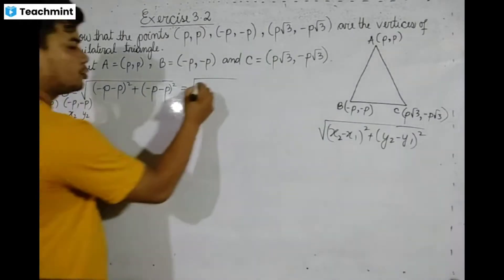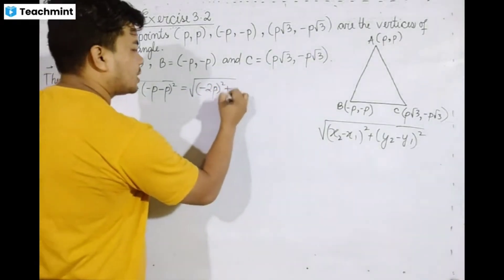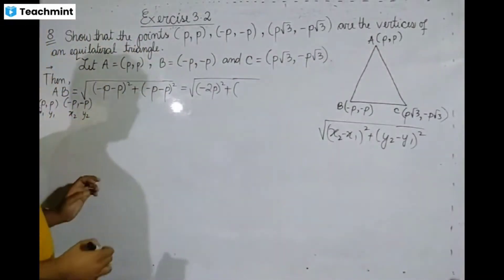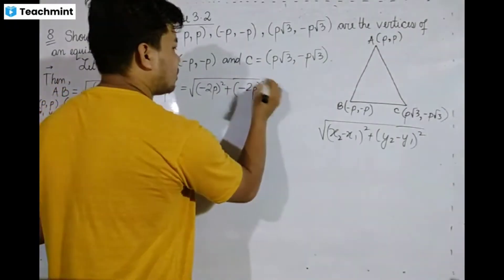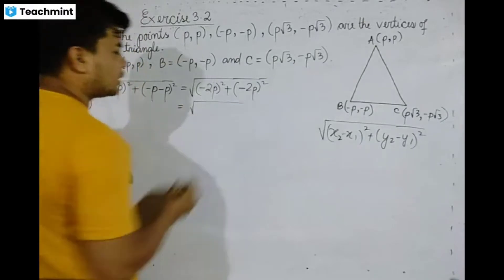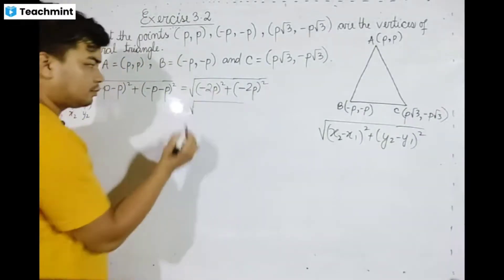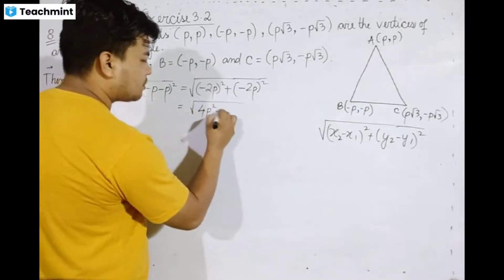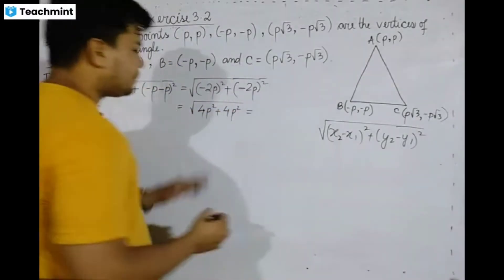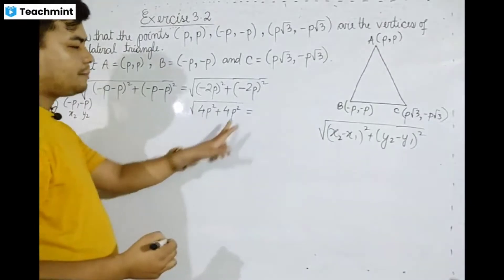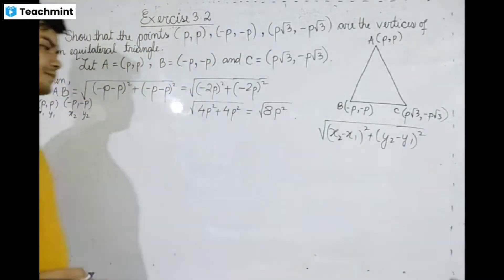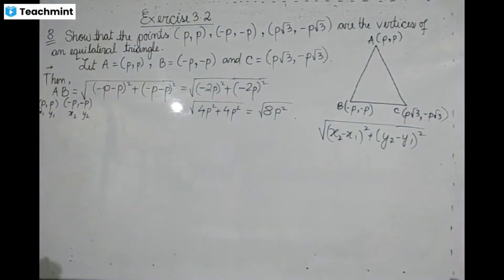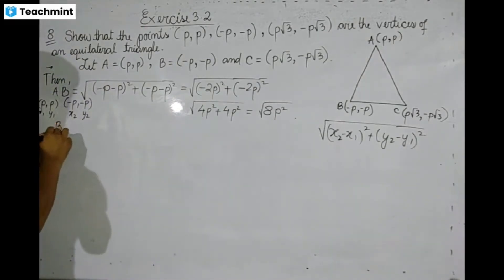So we get (-2p) whole square plus (-2p) whole square, total root over 4p squared plus 4p squared, total root over 8p squared. AB distance total equals AB, and now BC.